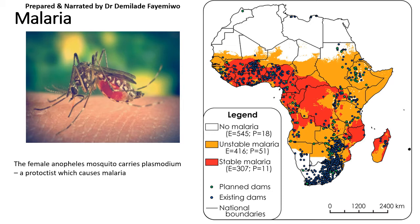The next disease is malaria. I'm from Nigeria originally, and malaria is endemic there, so people tend not to panic when someone has it. Malaria is caused by the female Anopheles mosquito — but not because the mosquito itself is the causative agent. The causative agent is Plasmodium, a protoctist that the mosquito carries inside its body and eggs. Please do not say the female Anopheles mosquito causes malaria in an exam; the mosquito is simply a transmitter or vector, not the causative agent.